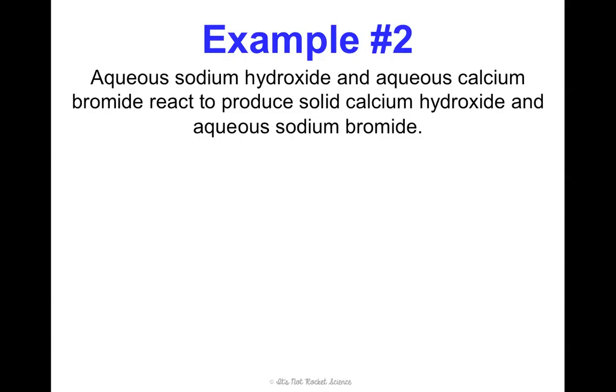So first we're going to have to write out the equation. Sodium hydroxide. That's Na positive 1, OH minus 1. Crisscross applesauce, that gives me NaOH. It's aqueous as it says here. And that's a plus sign. Aqueous calcium bromide. Ca positive 2, bromine's minus 1, crisscross applesauce, that's CaBr2. React to produce, that's my arrow, solid calcium hydroxide, that's calcium positive 2, hydroxide OH minus 1, crisscross applesauce, Ca(OH)2. And then aqueous sodium bromide. So Na plus 1, Br minus 1 gives you NaBr.